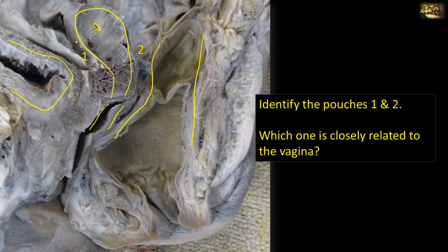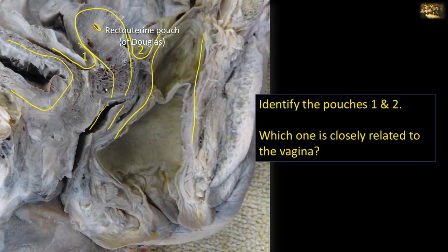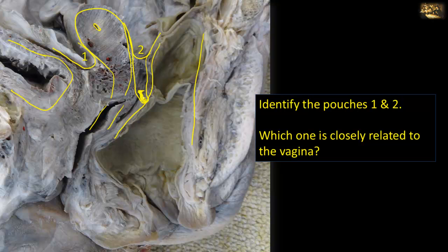So the first pouch, number one, is located between the uterus and the upper surface of the urinary bladder — it is the uterovesical pouch. The second pouch is located between the rectum and the uterus, and it's called the recto-uterine pouch, or the pouch of Douglas. The one closely related to the vagina is the recto-uterine pouch, because the pouch of Douglas is deep and dependent. It covers the posterior vaginal fornix and the whole cervix and posterior aspect of the uterus, and can be accessed through the vagina for that reason.